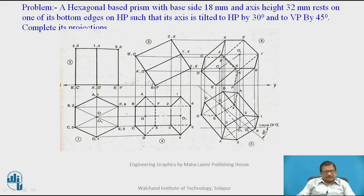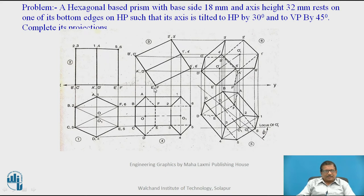As the axis is making 30 degrees, if you consider this as a right-angle triangle where this is the right angle and this angle is 30 degrees as given in the problem, then this will be 60 degrees. So, practically, we will draw a 60-degree angle at the base face, keeping EF on the XY line or EF on the HP. Make a 60-degree angle and redraw this cage here, so the front view of the prism with axis making 30 degrees will have the base making 60 degrees.